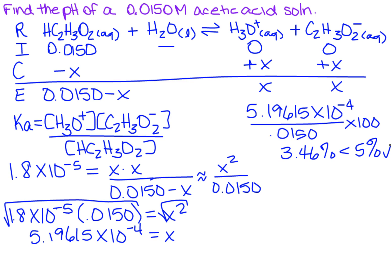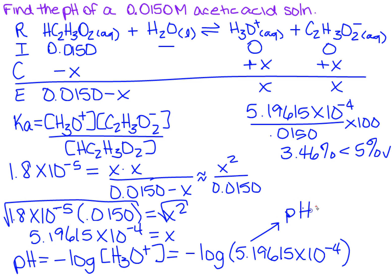But it doesn't want the hydronium ion, it wants the actual pH. So in order to find the pH, I have to take the negative log of the hydronium concentration. Remember, that's what we just found in X. So this is going to equal to the negative log of that big long number, which is 5.19615 times 10 to the minus 4th. When I put that in my calculator, remember, since it's pH, we're going to have to have two significant figures after the decimal. So I'm going to get the pH equals 3.28.